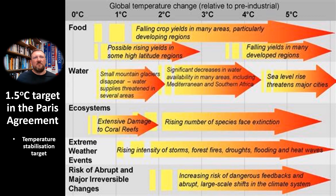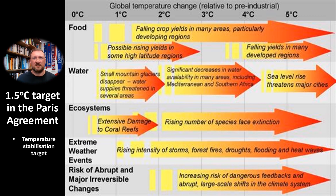A 1.5 degrees Celsius threshold has now been enshrined in the Paris Agreement, which would limit atmospheric concentrations of greenhouse gases to below 350 parts per million. At the present time, we've already exceeded 400 parts per million and we're on track for warming of around 4 degrees Celsius above pre-industrial levels, which would lead to catastrophic impacts over the coming decades, and you can see evidence for some of this in the slide.